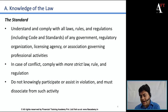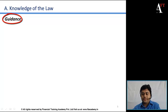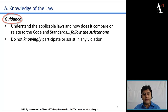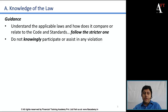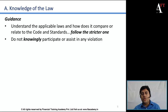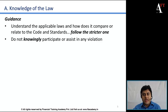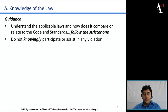The CFA Institute gives various guidance points and recommended procedures for certain situations. First: understand the applicable laws and how they compare to the code and standards. For example, suppose you are operating in a country where there are no stringent restrictions on insider trading, but the code and standards prohibit any action by a member or candidate taking advantage of inside information. In this case, the code and standards are more strict, and as a member or candidate you need to follow the most strict one.